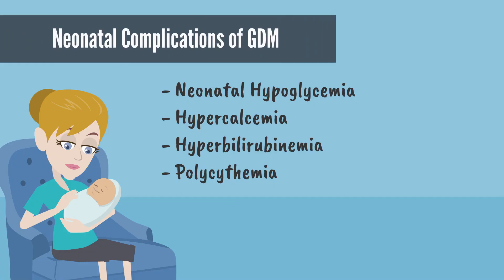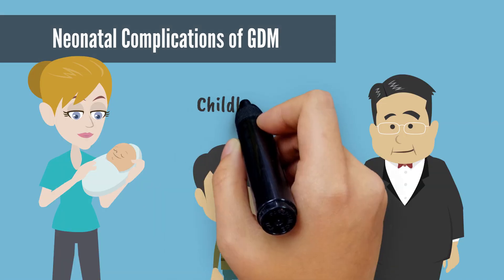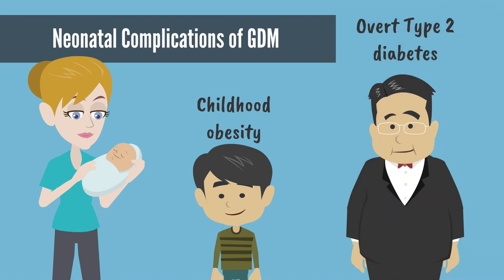At the time of delivery, the neonate will continue to produce the high levels of insulin it made during intrauterine life as a function of exposure to prolonged elevated maternal serum glucose. The elevated insulin levels can continue for the first 24 hours after birth, leading to profound neonatal hypoglycemia. These neonates are also at risk for hypercalcemia, hyperbilirubinemia, and polycythemia. In the long term, these neonates can go on to develop childhood obesity and are at increased risk for overt type 2 diabetes themselves.